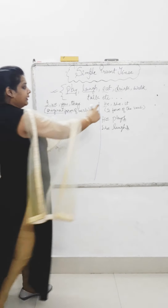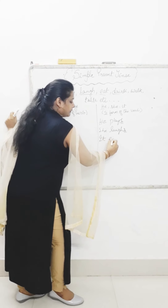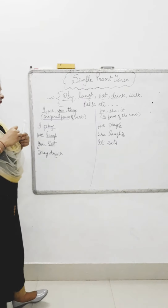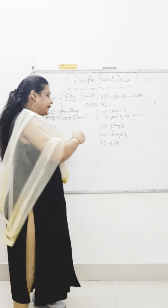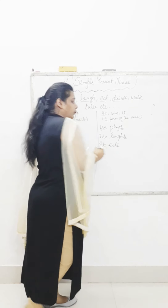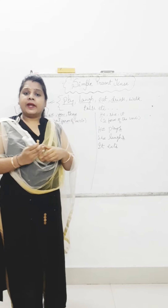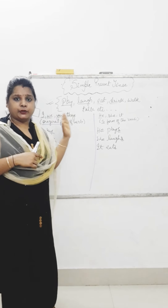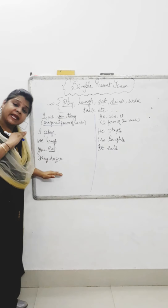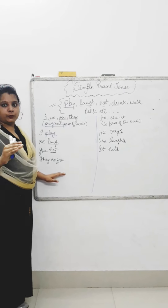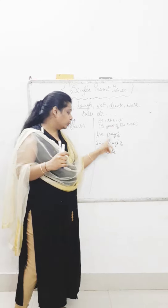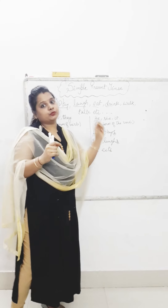Then, you eat. Then, it eats. When I wrote 'it eats,' I added S to the original form of the word. Very simple. Whenever a sentence begins with I, we, you, or they, we have to use the original simple plain base form of the word. But when a sentence begins with he, she, or it, then we have to use the S form — we just add the letter S to the original form of the word.